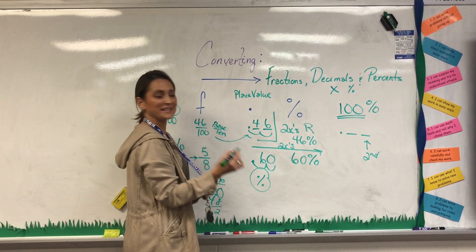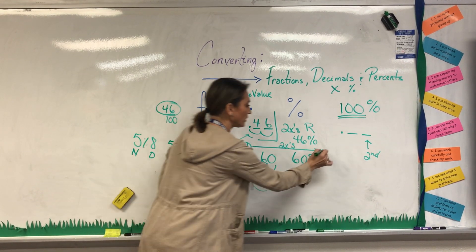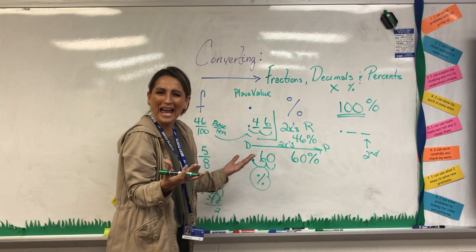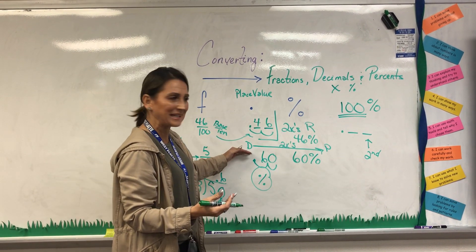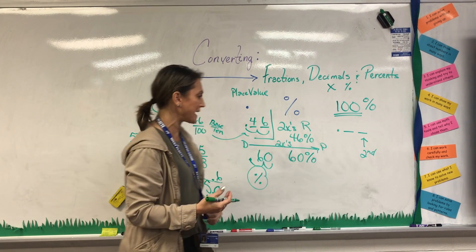And I told kids today, look at it this way. Decimal to percent. Look at the alphabet. Decimal D, percent P, moving to the right.